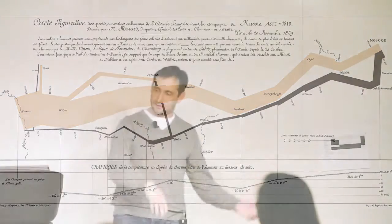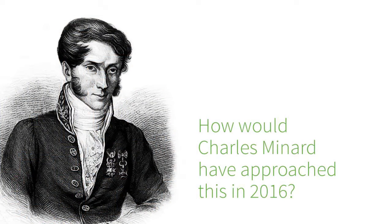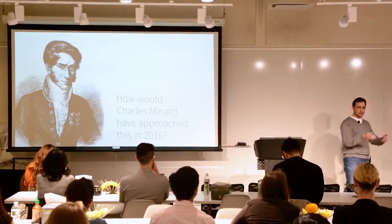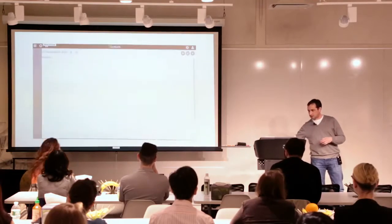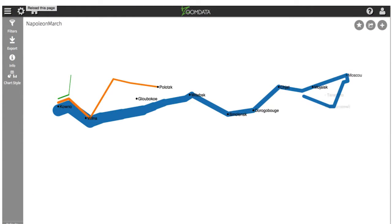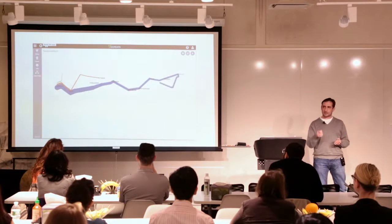If Charles Minard were in the audience today, I would argue he would follow very much the same steps but have better tools to do it faster. He would still collect data — in his time, that meant reading text and manually tabulating; today, he'd connect data sets, and that data set for Napoleon's campaign already exists in open source form. He might have decided to invent the same visualization, and with computers and analytic tools, he might have added additional dimensions — animating it, adding DVR controls so you could simulate how troops moved over time.